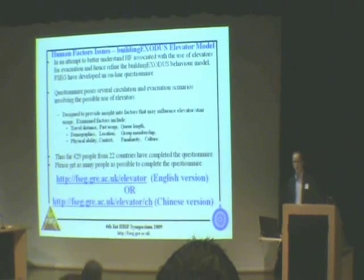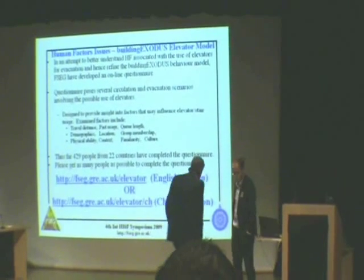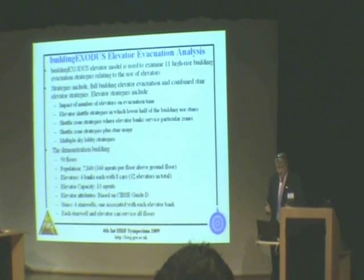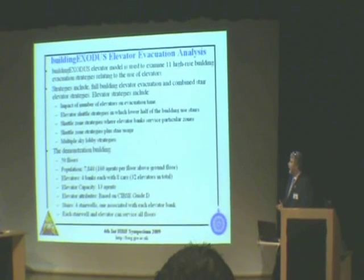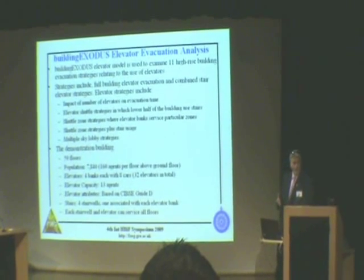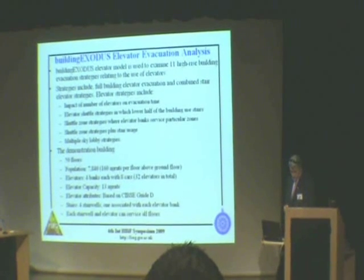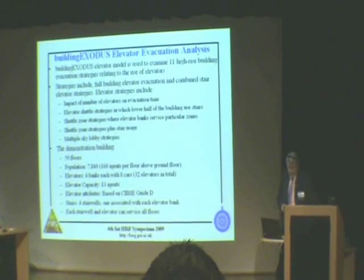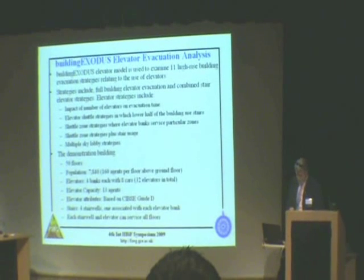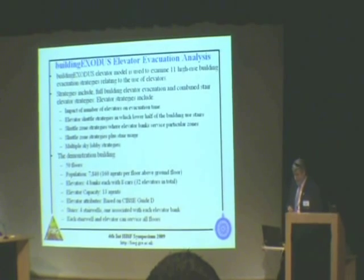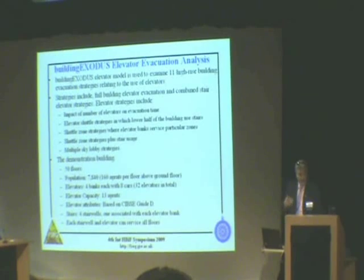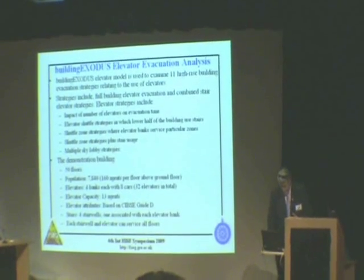Now I'm going to pass over to Ed, who's going to talk about some of the simulations. We've taken the model we've developed and applied it to a study of a 50-storey building with 7,800 people, looking at four different evacuation strategies to determine the optimal strategy to empty the building as quickly as possible. The building has 32 elevator cars in four banks of eight, and four staircases. The elevator attributes are based on the CIBSE Guide D, so we have all the acceleration, jerk, and other properties of the elevators, including door opening and closing times.